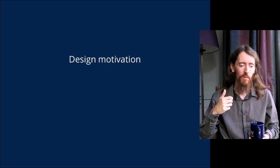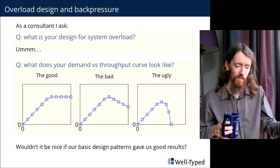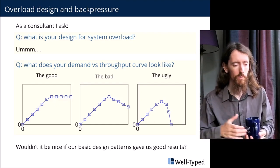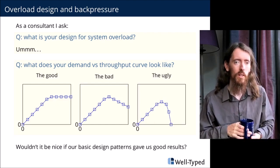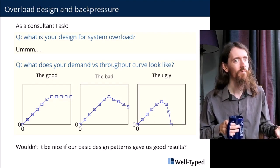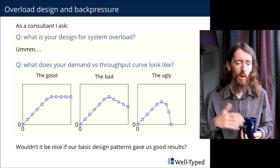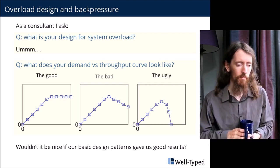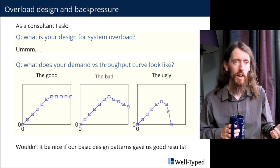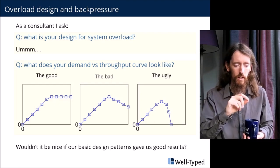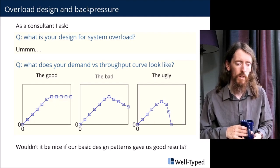I'm a consultant, and very often consultants get called in not to help design a new project but when things are going badly. So it's not uncommon that I see a customer who's having performance problems or system performance problems, which very often are to do with concurrency — not necessarily Haskell specific. So I ask them what their design is for system overload, and unfortunately all too often the answer is: well, we haven't really thought about that. Or: I've got a bounded queue somewhere. Or: back pressure — what's back pressure?